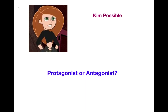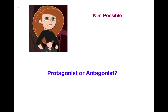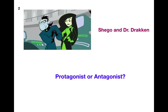Number 1 — Kim Possible. Is she the protagonist or the antagonist? Write out the whole word because that's a great way to get better at spelling. Number 2 — Shego and Dr. Drakken. Protagonist or antagonist? Kim Possible is the main character, which makes her the protagonist. Shego and Dr. Drakken oppose Kim and are constantly trying to take over the world, so they would be antagonists.